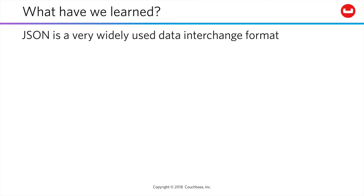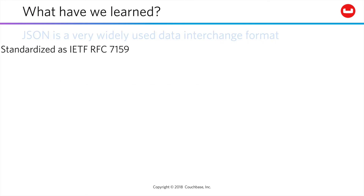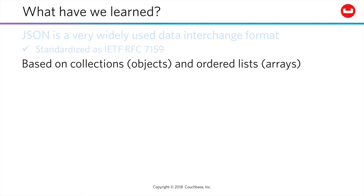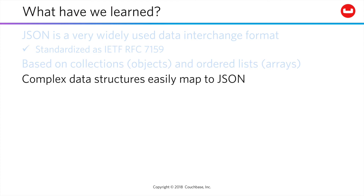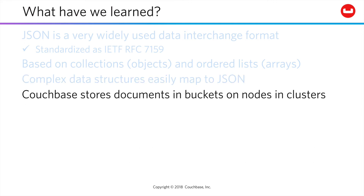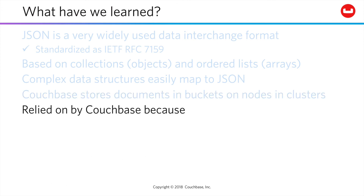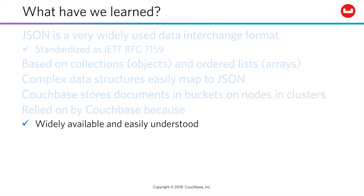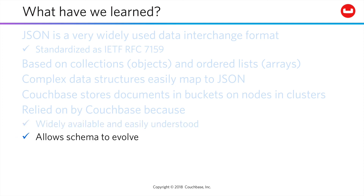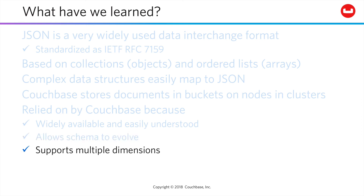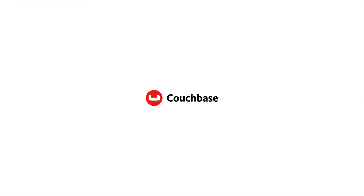So what have we learned? JSON is a very widely used data interchange format — so widely used, it's been standardized. It's based on collections and ordered lists, but because these can be nested as needed, it is easy to represent complex data structures. Couchbase stores documents in buckets, on nodes, in clusters. Couchbase focuses on JSON because it is widely available, easily understood, easily evolved as your code and data structures evolve, and it supports multiple dimensions and maps easily to objects. Next up, we're going to dive into the services that are exposed by every Couchbase node. Stick around.